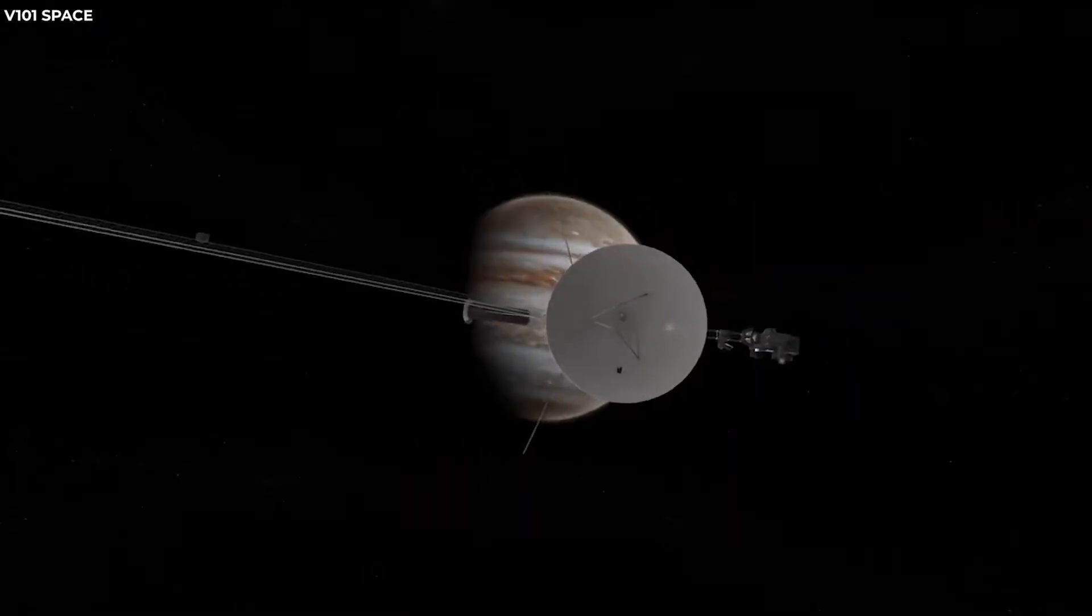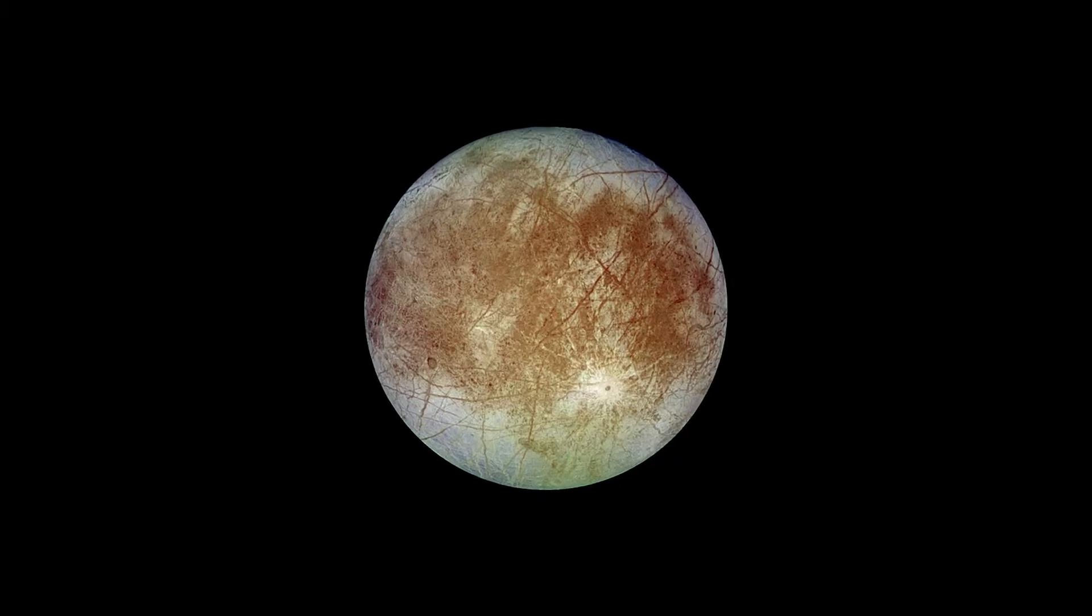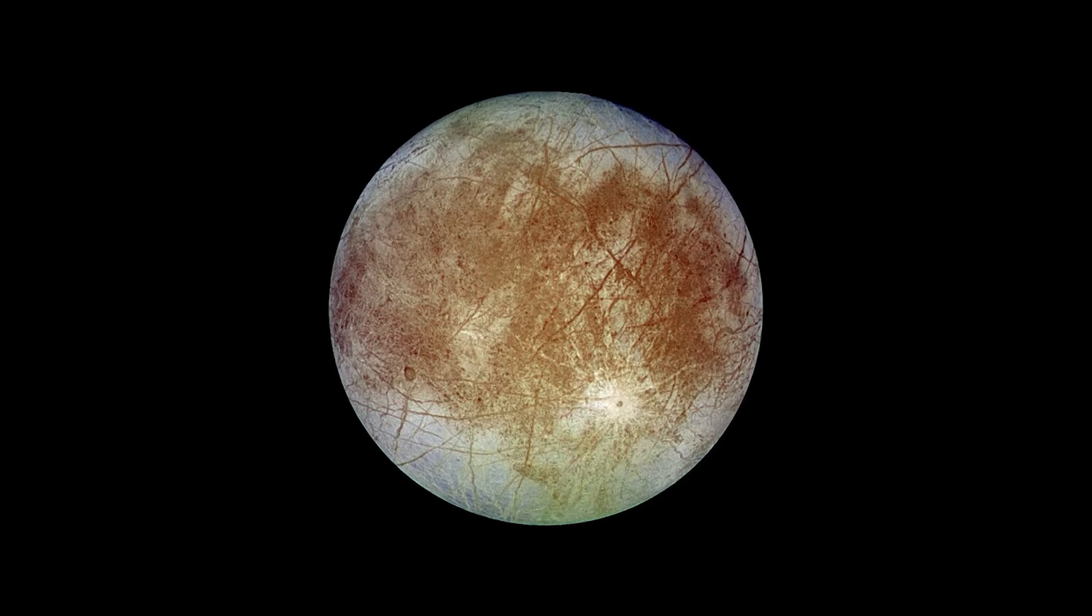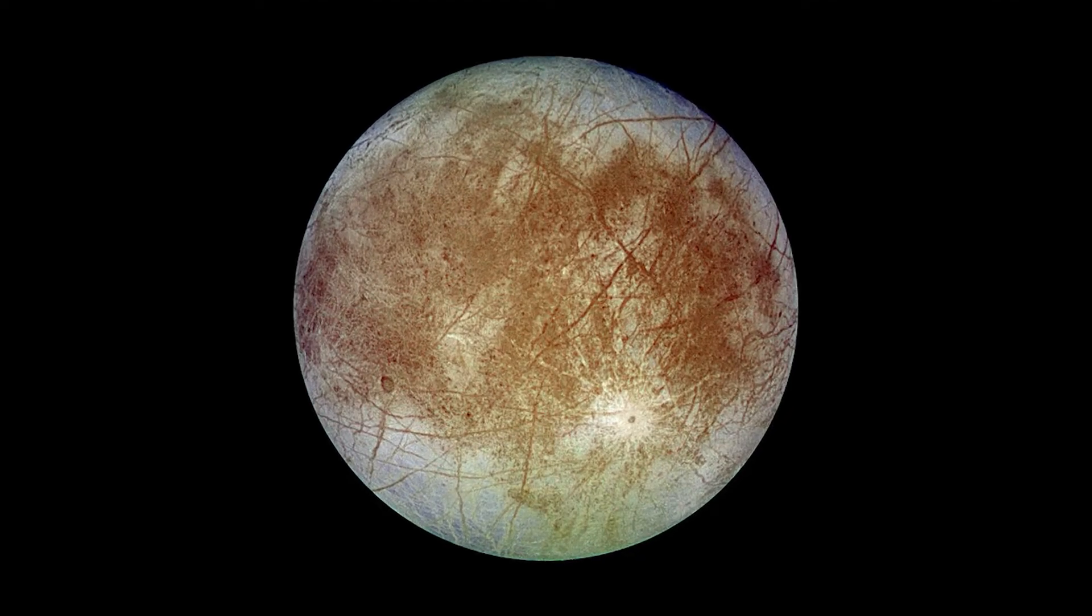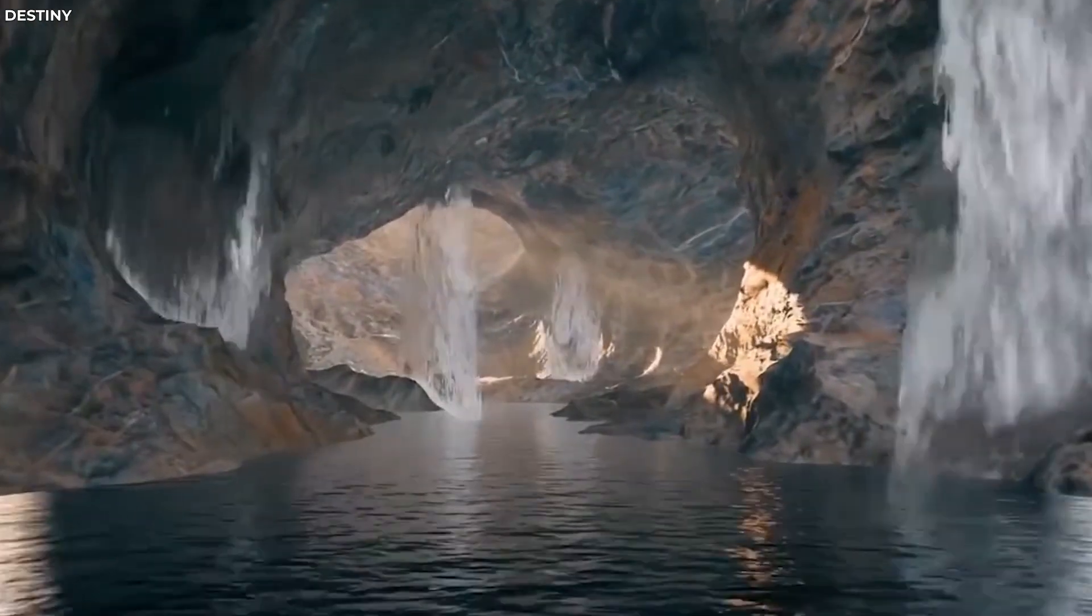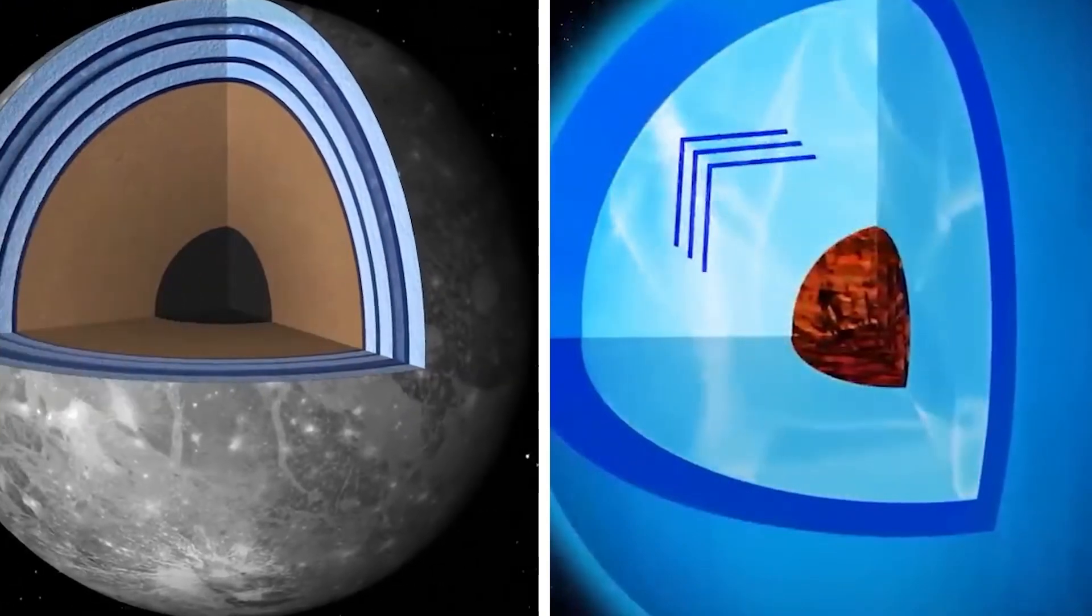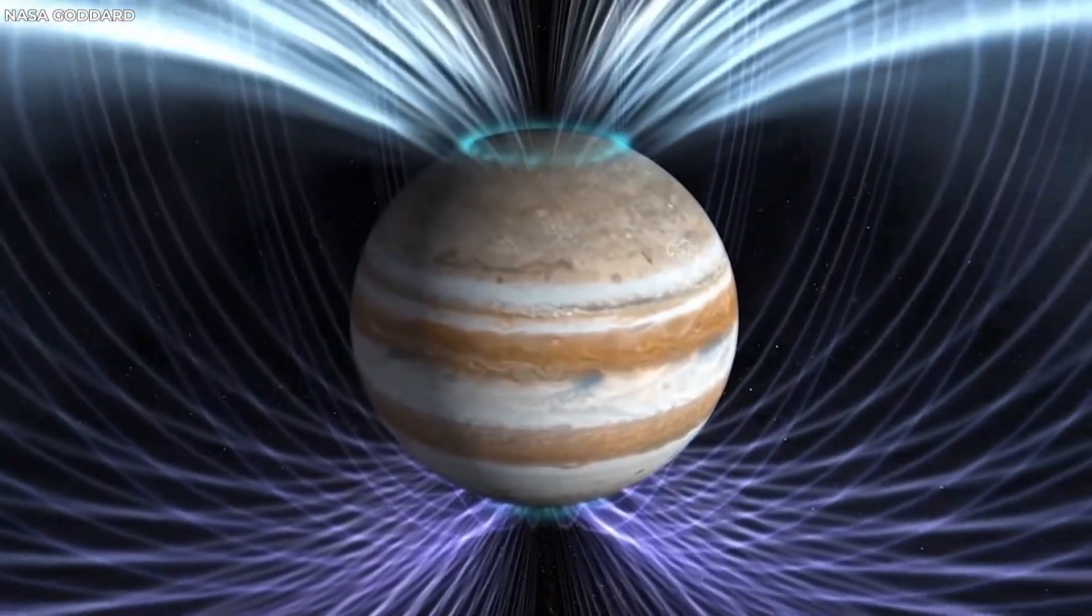Voyager 1 also observed Jupiter's other moons, such as Europa, Ganymede, Callisto, and Amalthea. It found that Europa has a smooth and icy surface with few craters, suggesting that it is geologically young and may have a subsurface ocean of liquid water. It also found that Ganymede has its own magnetic field, which is embedded in Jupiter's magnetosphere.